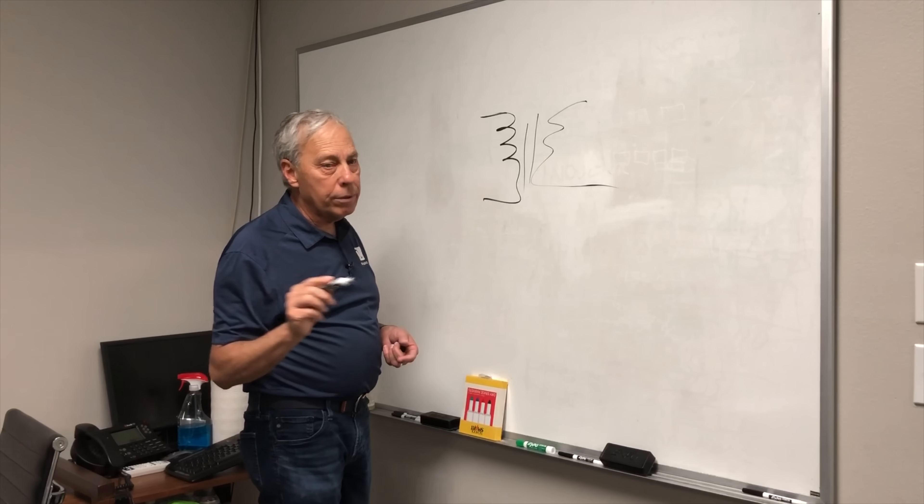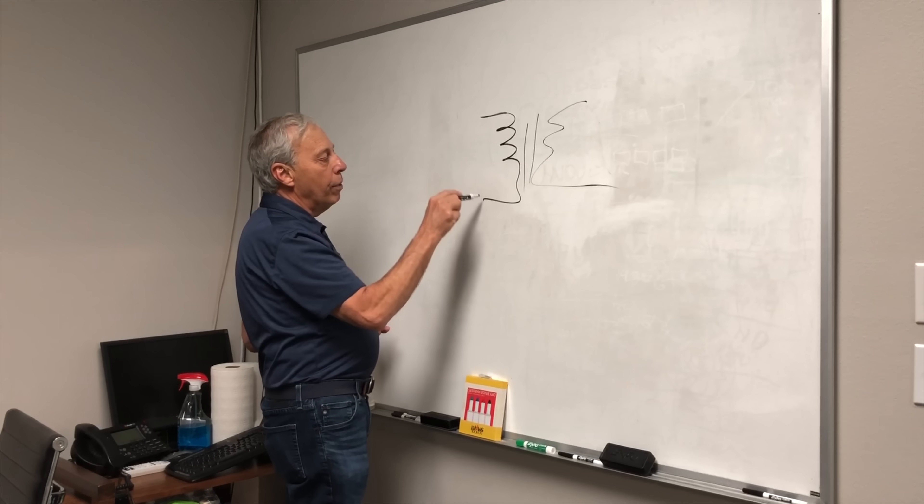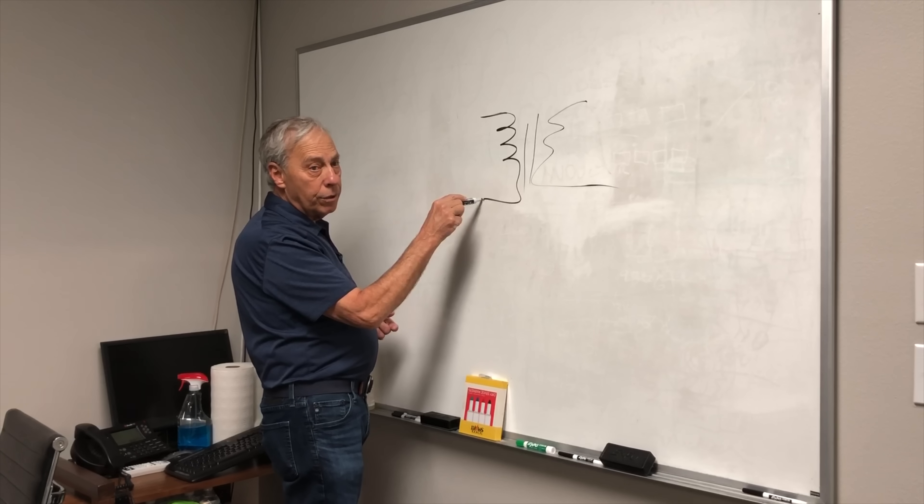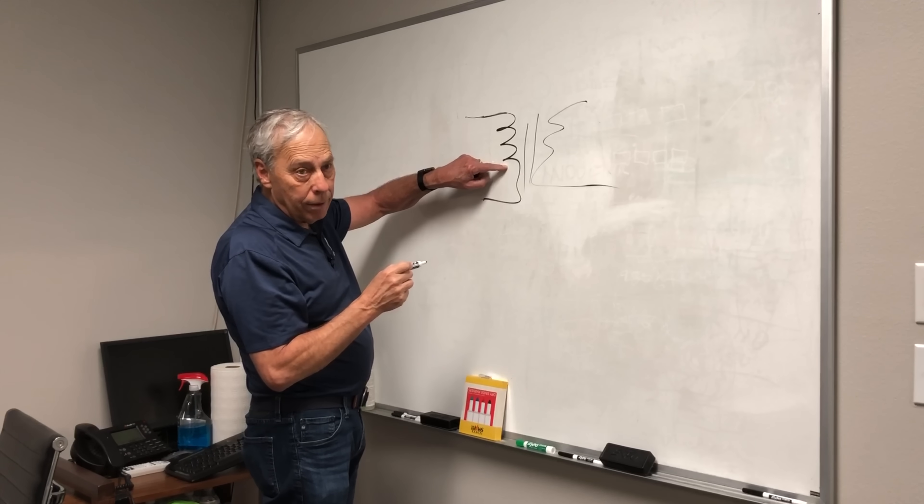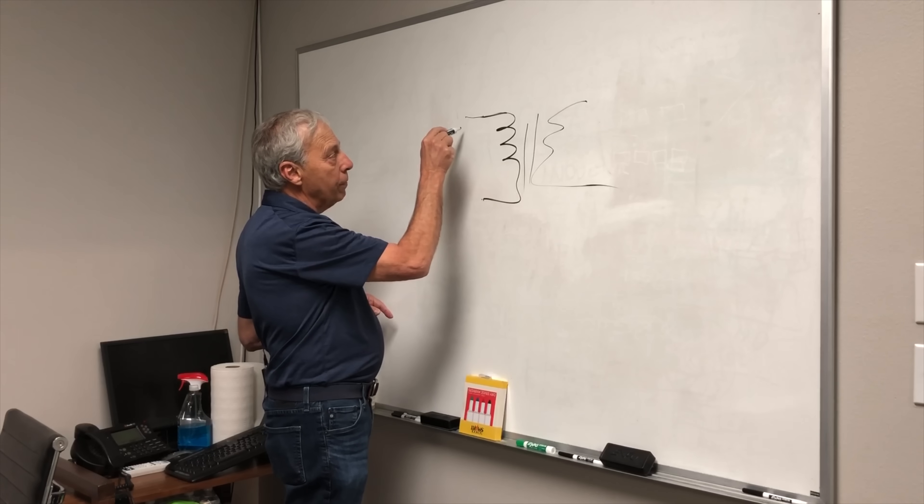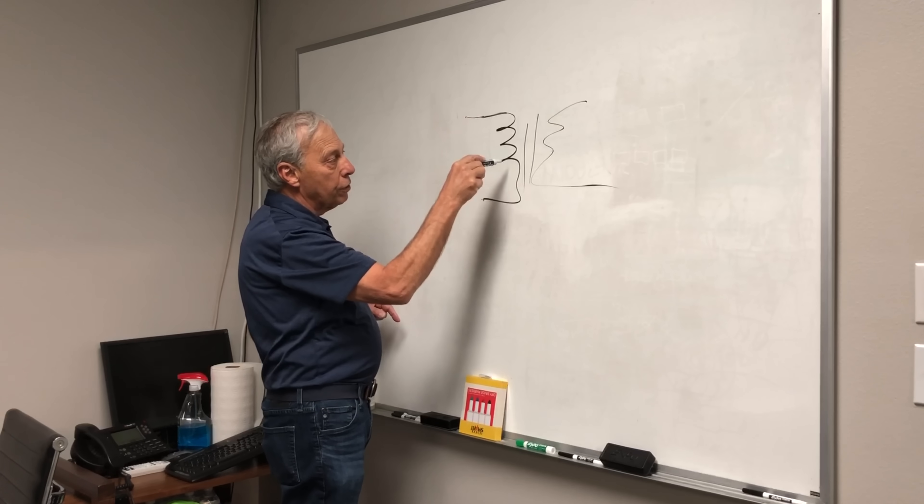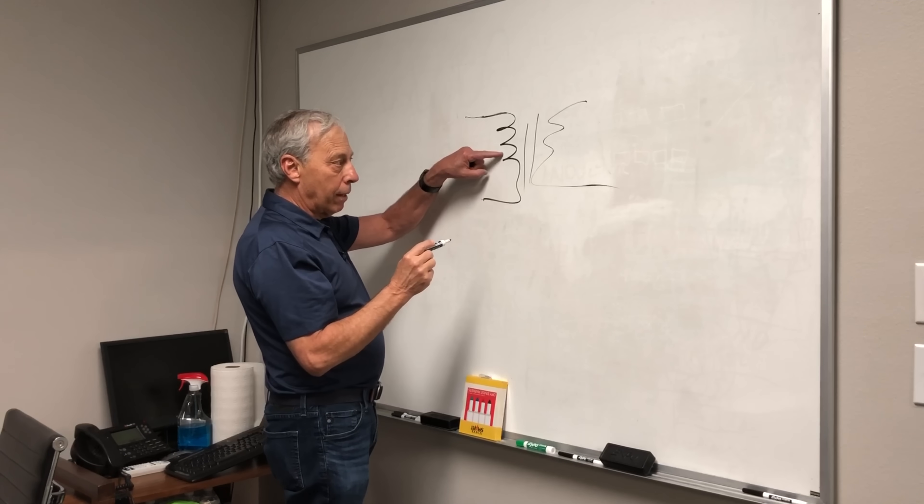The problem is, if I put DC into this input coil, it's going to turn this into a permanent magnet. Because if it's always got a certain amount of voltage on it, this becomes a permanent magnet.